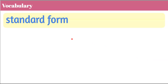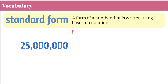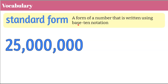More vocabulary — let's talk about standard form. When a number is written in standard form, it's written using base 10 notation. So this is 25 million in base 10 notation. You've learned the ones digit, tens, hundreds, thousands, ten thousands, hundred thousands, millions, ten millions. We consider this standard form written in base 10 notation.